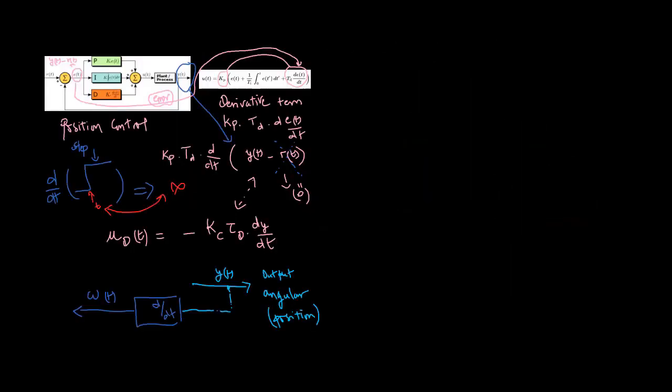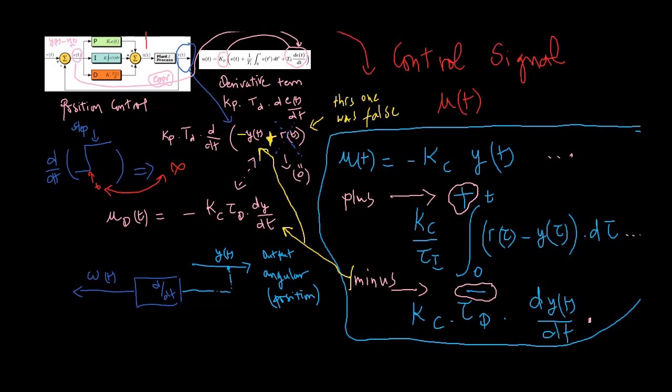Additionally, the proportional control KC can also be implemented on the output only to avoid an overshoot in the reference response as seen in the last video. Thus, the PID control signal UDT is calculated using this equation.